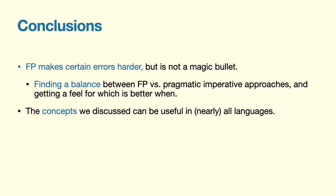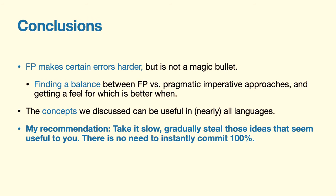In conclusion, FP overall makes some errors somewhat harder to commit. It's not a magic bullet — in reality you always want to find some pragmatic balance between doing it quickly with imperative things versus making a nice, verifiable pipeline. The concepts mentioned are useful in nearly all languages. My recommendation is: take it slow. Don't force yourself to do all the bells and whistles at once. Just take one or two things you find cool — like the filter command — try it, play around with it, gradually steal those ideas and run with them. There's no need to go from 0 to 100% at once. If you add some of these concepts to your codebase, you may at some point say: hey, that works nice, I want to do that more often.